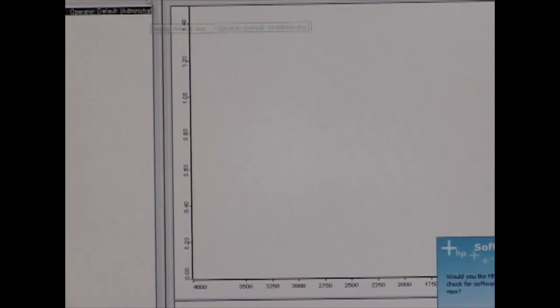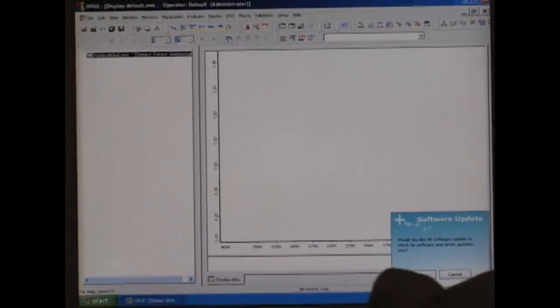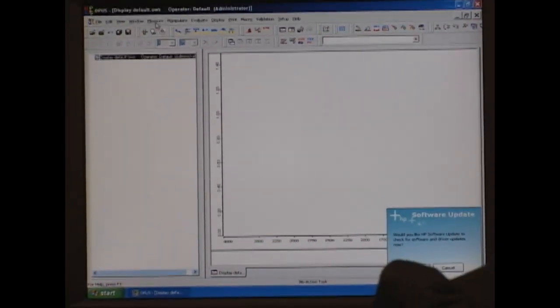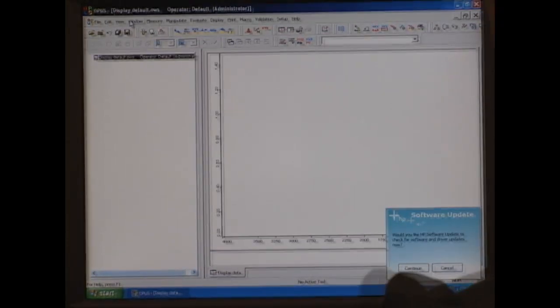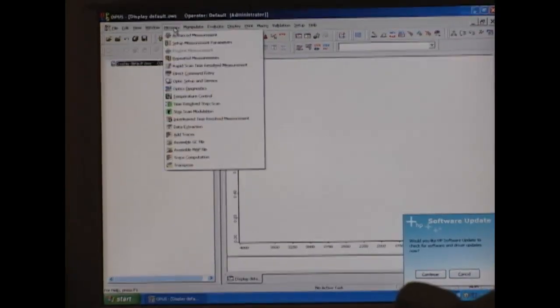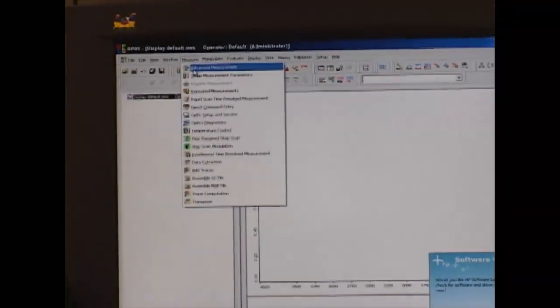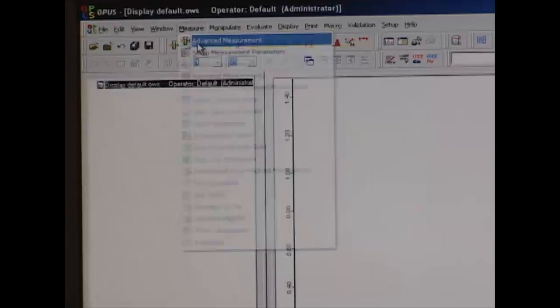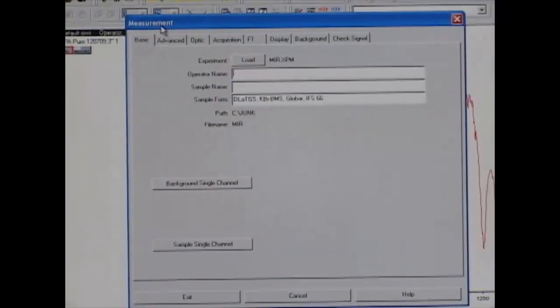On the screen you'll have a variety of different buttons at the top of your page. The first thing we want to do is go to Measure, and from Measure we go to Advanced Measurement. Once the measurement window opens, we're going to go into Basic and make sure that the experiment is MIR.AXPM.